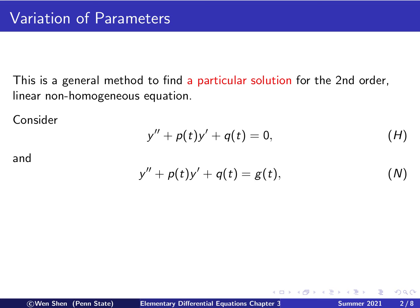Secondly, the previous discussions we have had are restricted to a certain type of source term g(t). Namely, the types of terms for which we can find the form of a particular solution are limited to exponential functions, sine and cosine, and polynomials, and combinations of them — multiplying two or three of them together and adding up. Here we can handle a general function g(t), as long as g(t) is given.